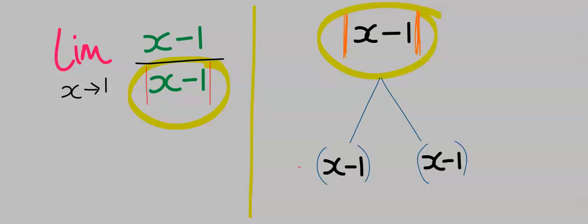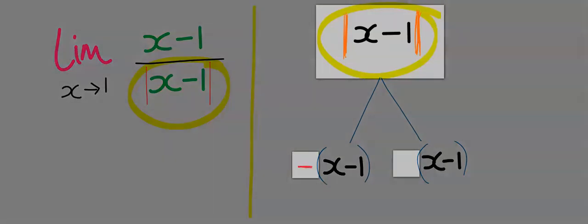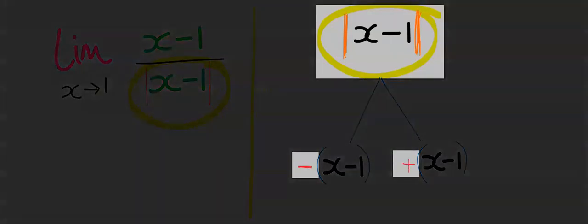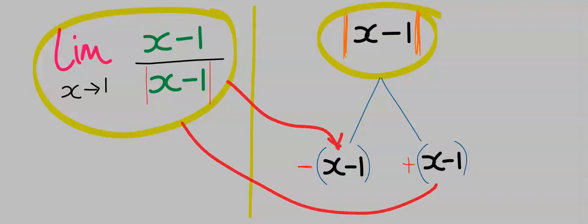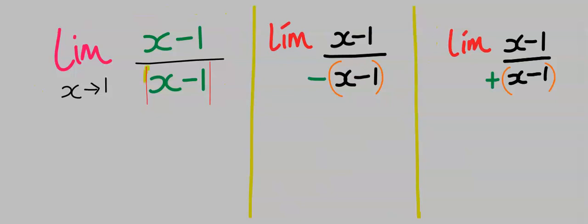With this rule in mind, the denominator, which is this, will become minus and plus. With this basic rule, this limit will be split into two. One of them we take this, and the other we take this. Hence, because of the presence of this absolute value, this entire question will be split into two as x tends to one.